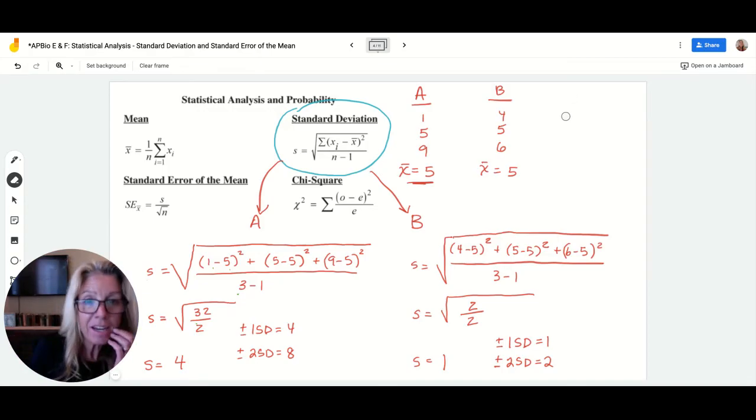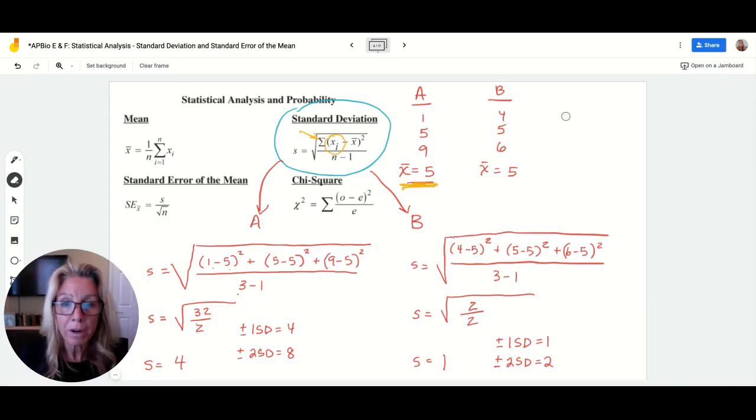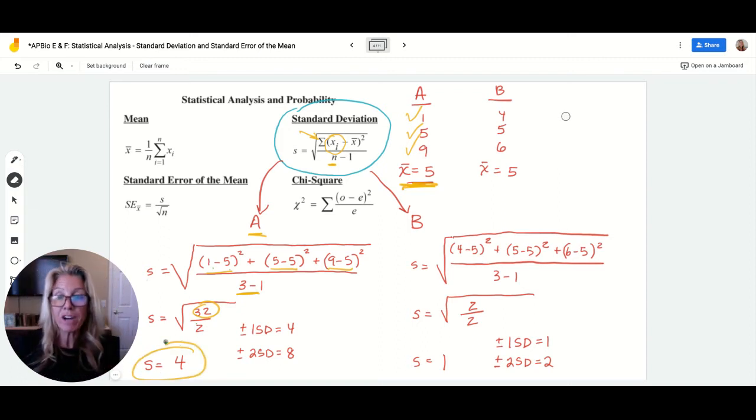So this is how we do that. So here on sample A, I already have my mean and in your equation here, the E right here just means sum of, you're going to add it up and you'll take each of your individual data points. You will subtract off the mean, X with a line over it is the mean and square that. And you will do it for all three of your data points here. And then you divide it by the sample size minus one. So let's do that for A. So I just said one minus five squared, five minus five squared, and nine minus five squared. And I just added all of that up and it turns out to be 32. And then you just take your sample size. I had three in my sample minus one divided by two, 32 divided by two is 16. I take the square root and my standard deviation value is four.